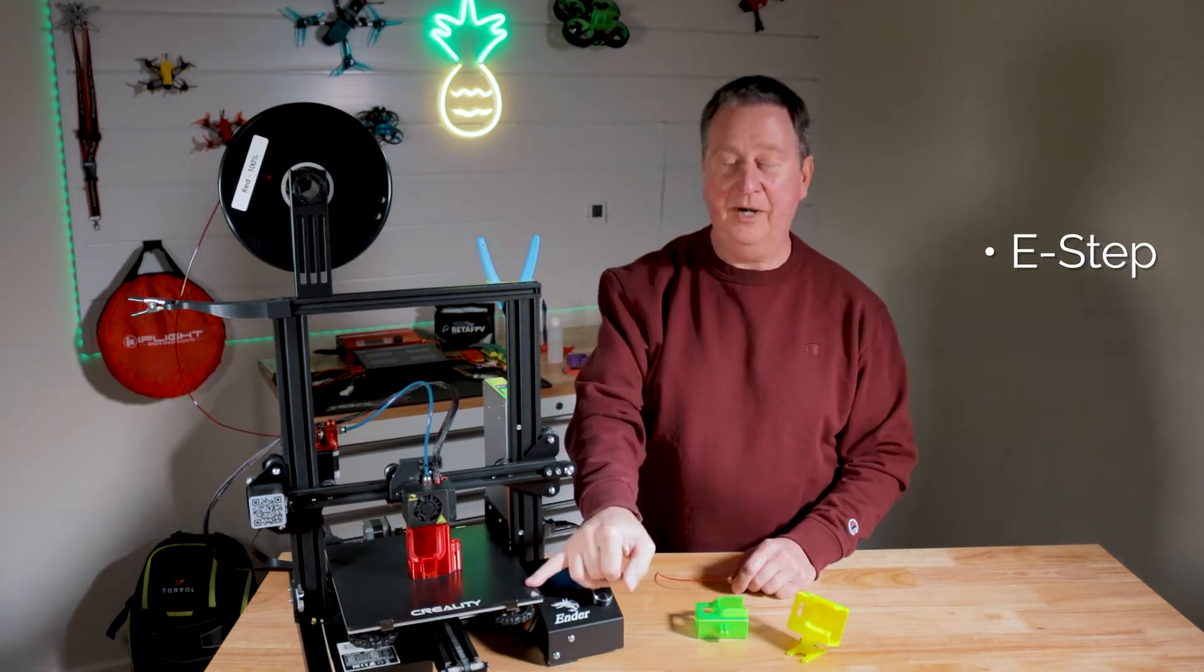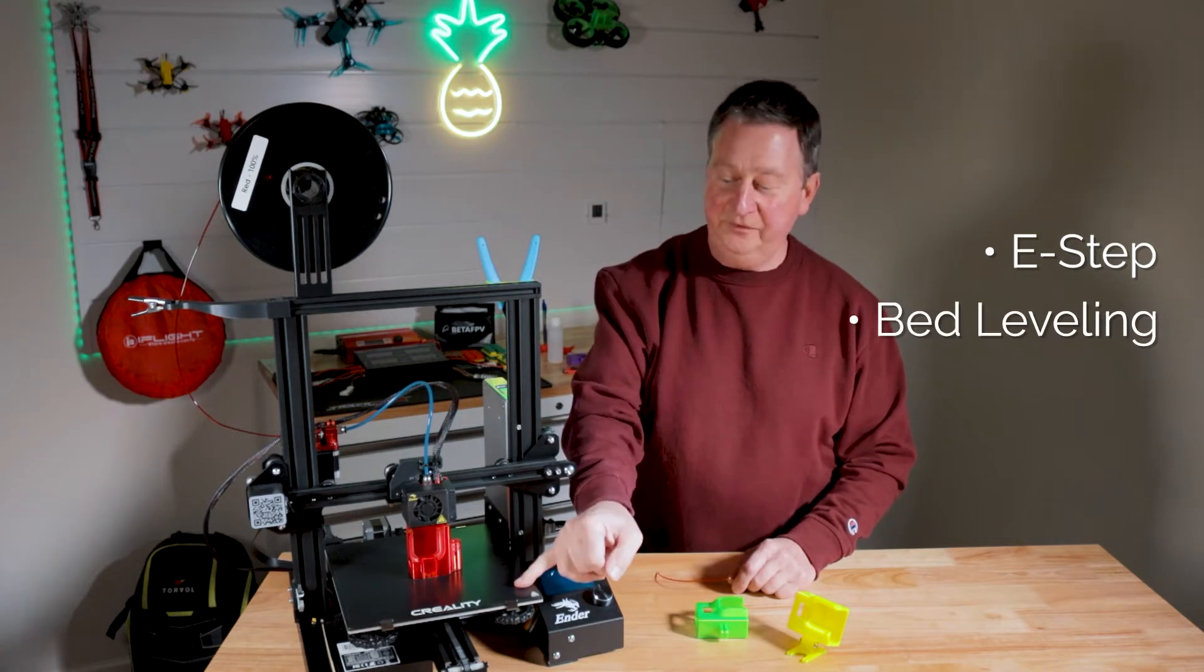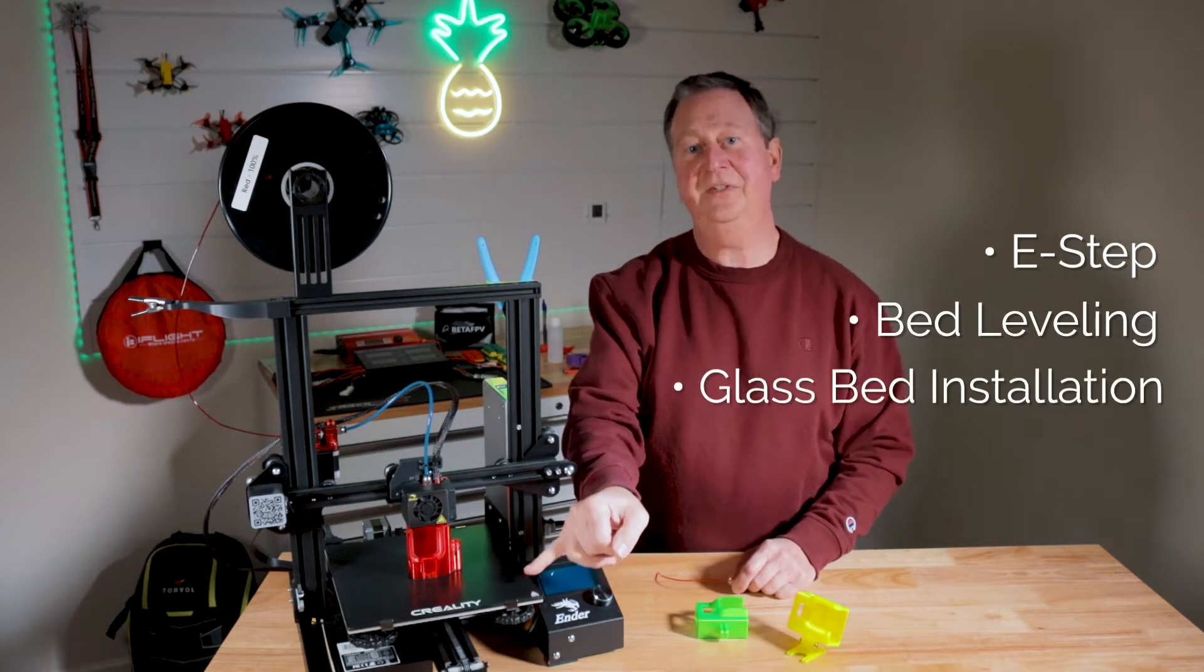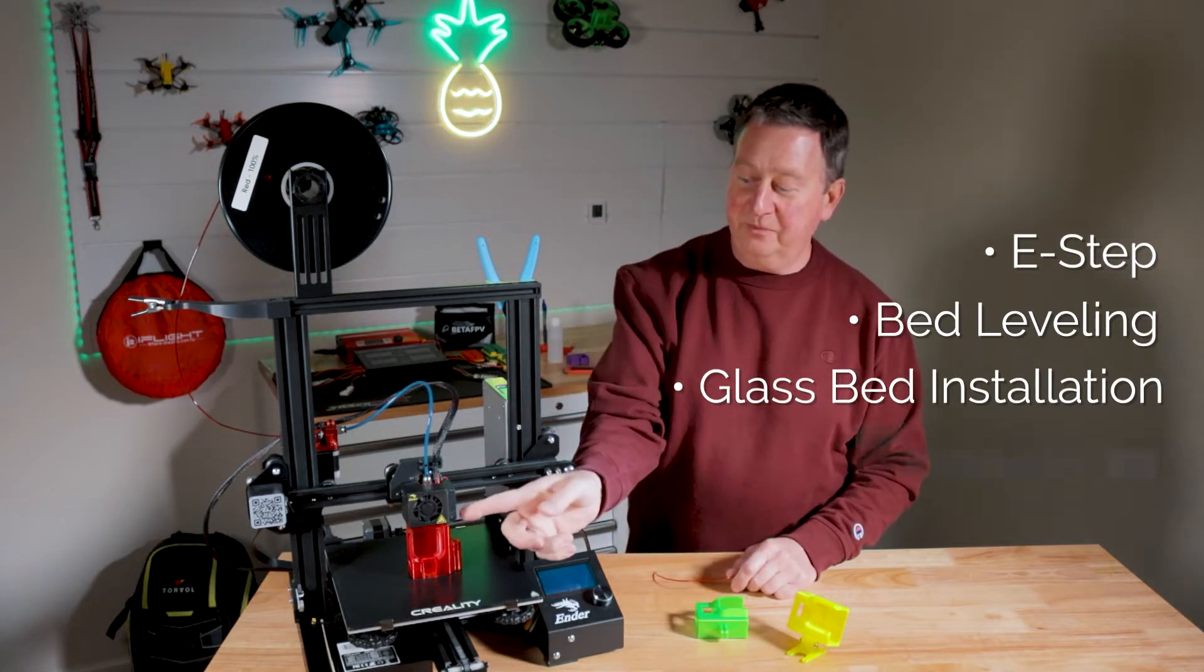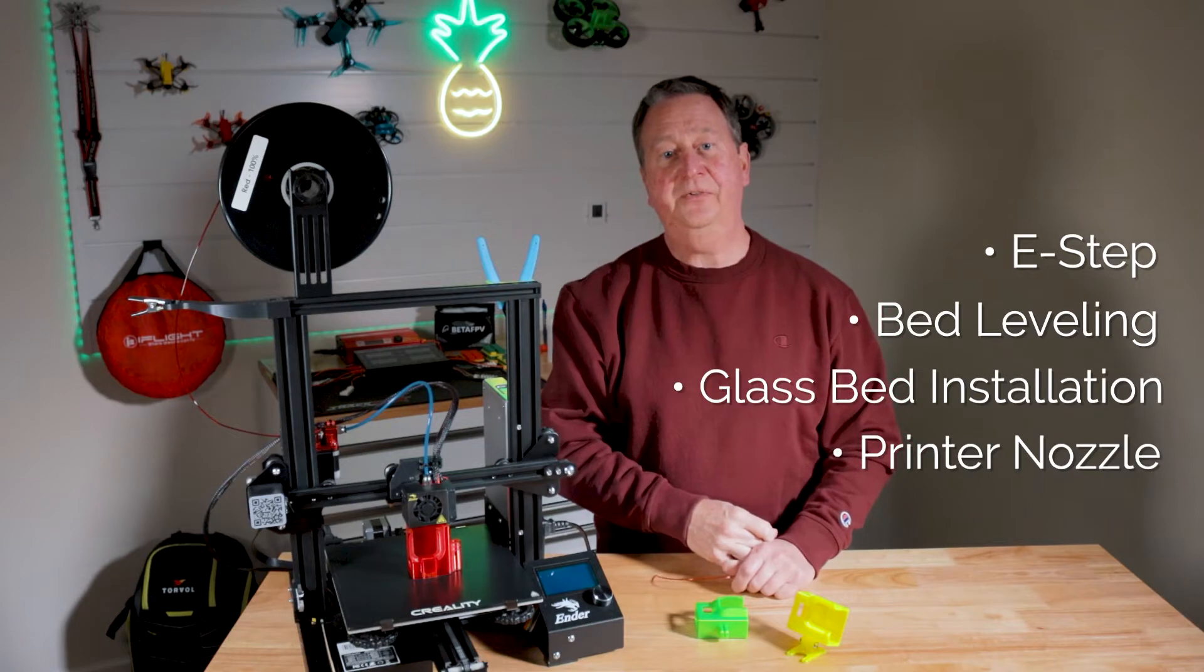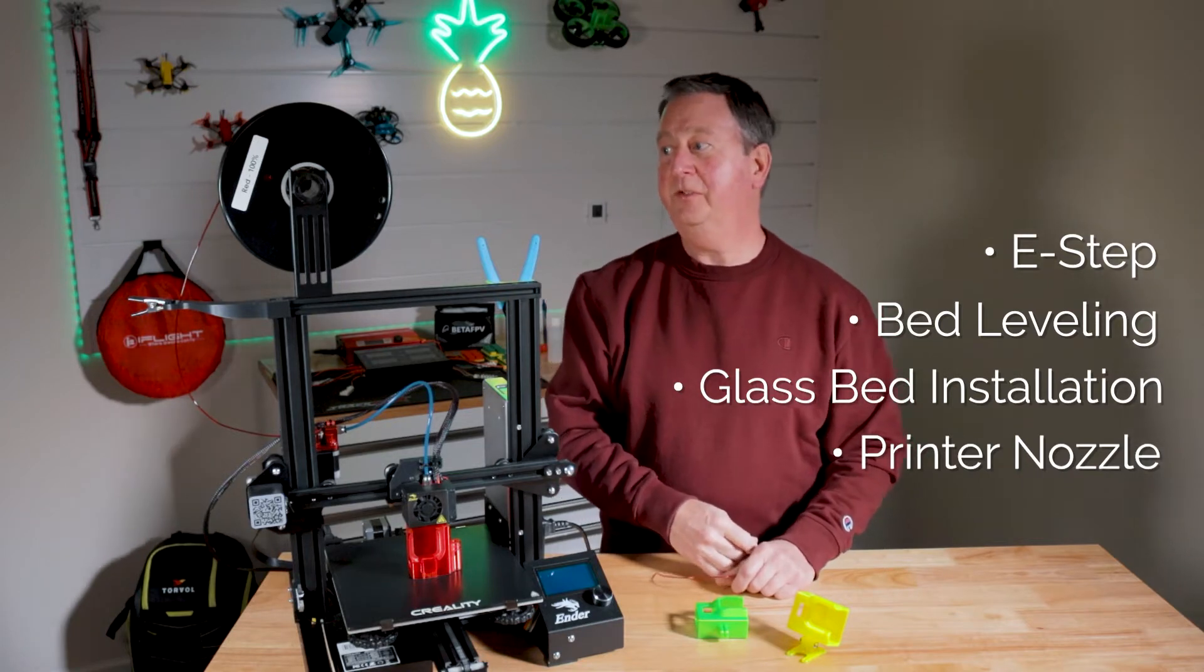We're going to talk about how to properly level the bed, how to install a glass bed on this printer, which isn't as easy as just putting a piece of glass on it. We're also going to talk about how to change the printer nozzle. We're going to also have another video that is the filament flow.